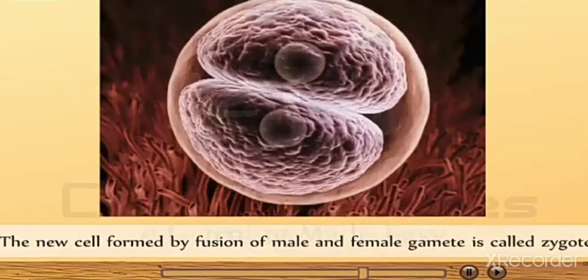A new cell formed by the fusion of male and female gamete is called zygote. During fertilization, the nuclei of the sperm and the egg fuse to form a single nucleus. This results in the formation of a fertilized egg or zygote.